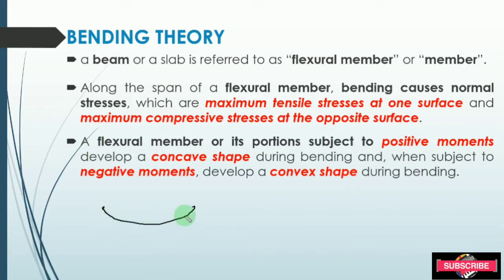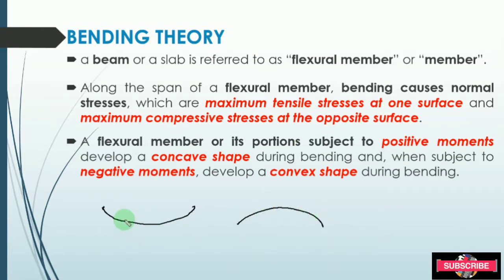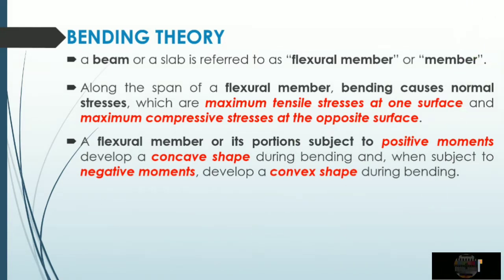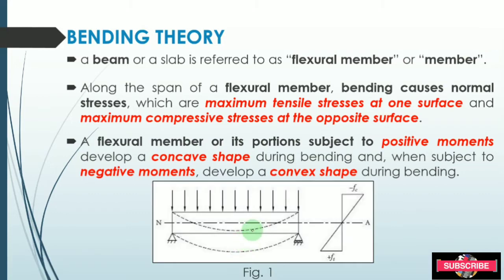For the convex shape it is the opposite. An example: a simply supported beam with a uniformly distributed load will experience sagging and develop a concave shape.